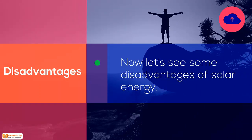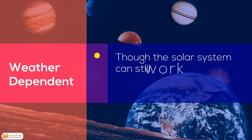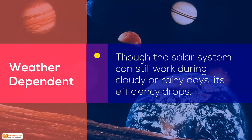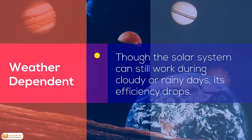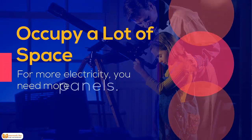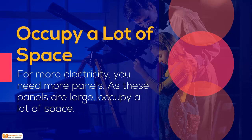Now let's see some disadvantages of solar energy. Weather dependent: though the solar system can still work during cloudy or rainy days, its efficiency drops. Occupies a lot of space: for more electricity you need more panels, and since these panels are large, they occupy a lot of space.